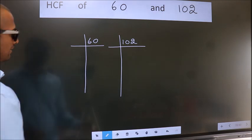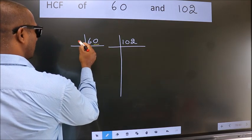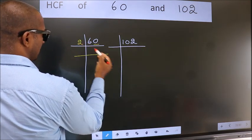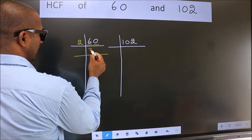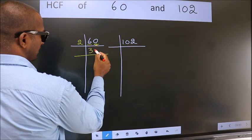Next. Last digit 0, so take 2. First number 6, when do we get 6 in 2 table? 2, 3 is 6. This 0 as it is, down.